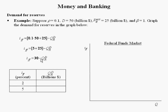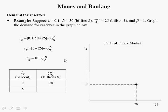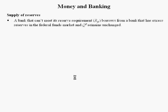Let's graph the demand for reserves. If the federal funds rate is 2%, then solving gives a quantity demanded for reserves of 28 — since 30 minus 28 equals 2. When the federal funds rate is 5%, the quantity demanded for reserves is 25. Plotting these points yields a downward-sloping demand curve for reserves.